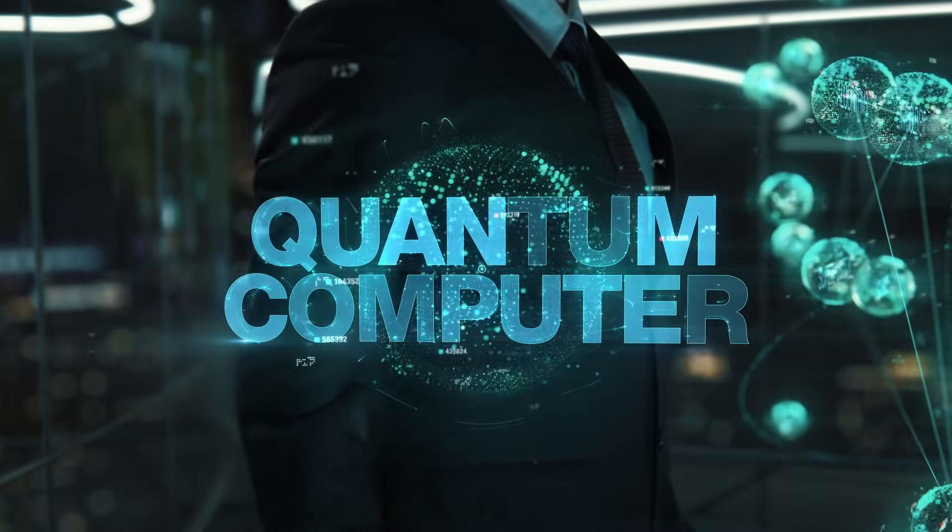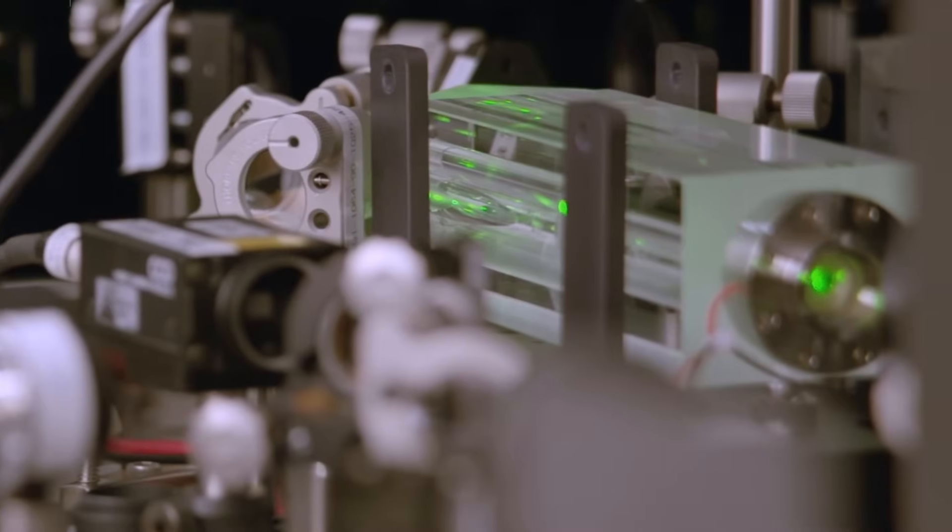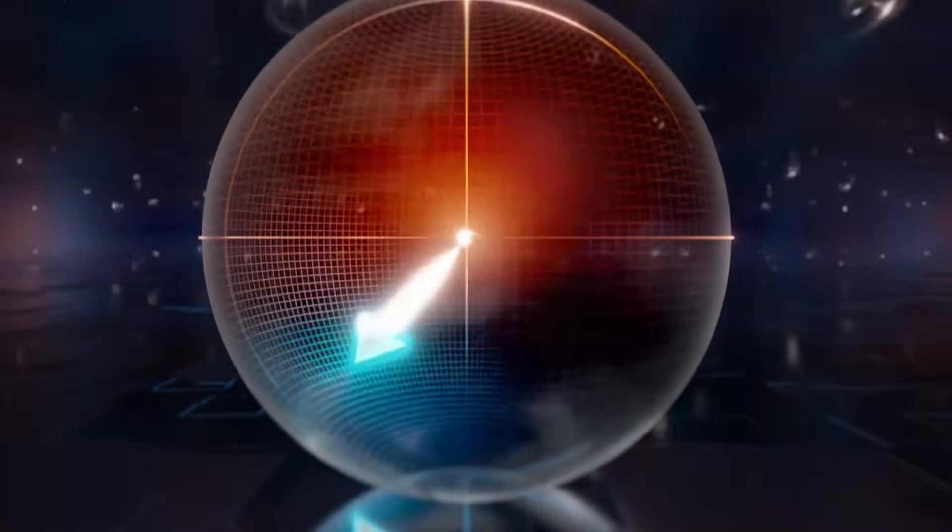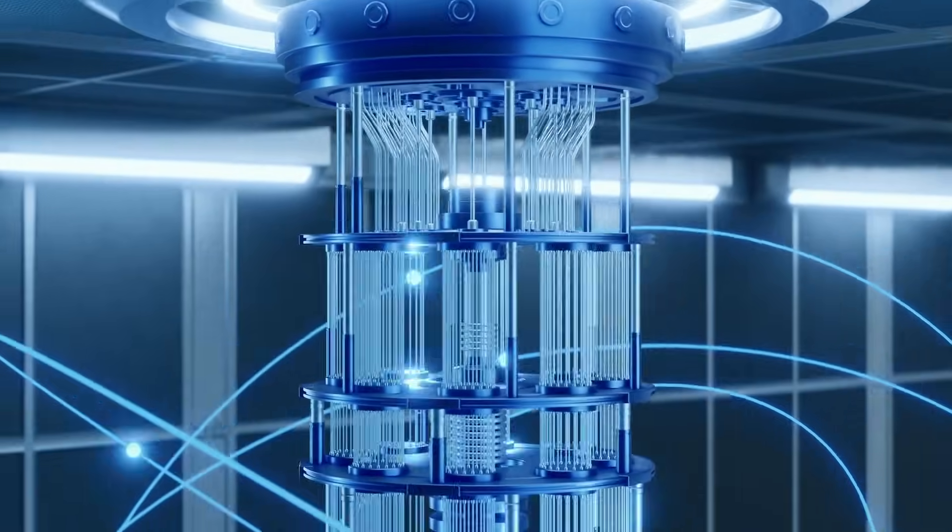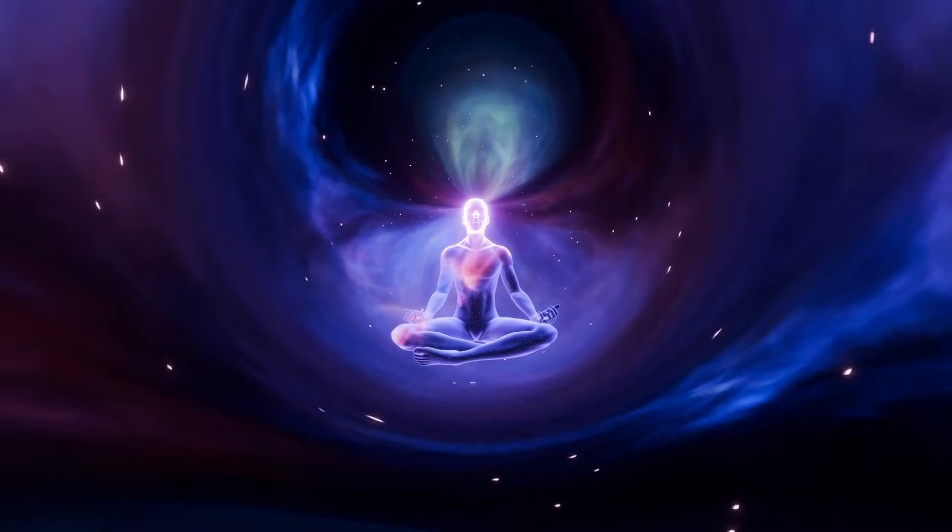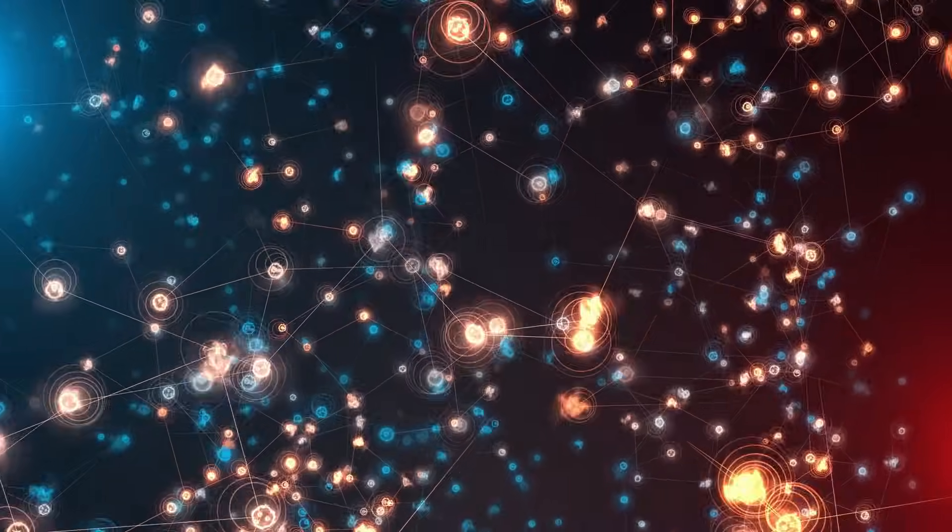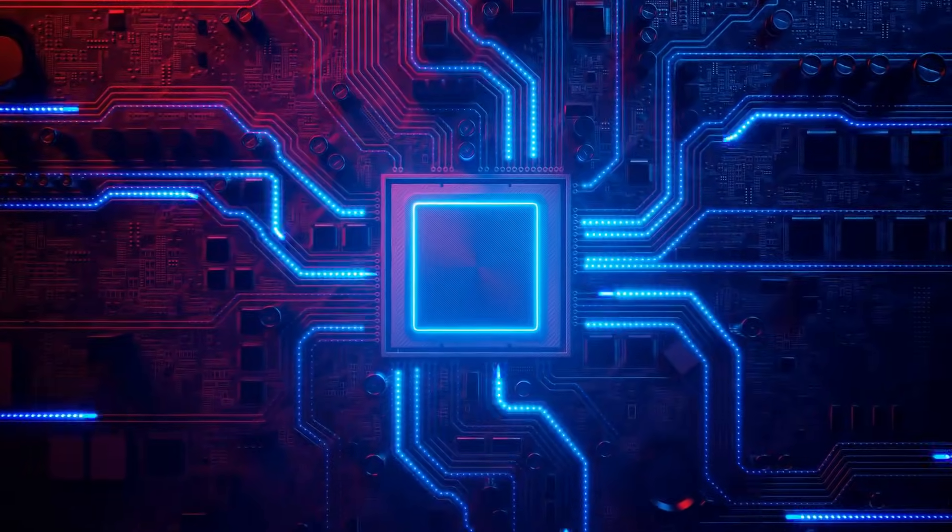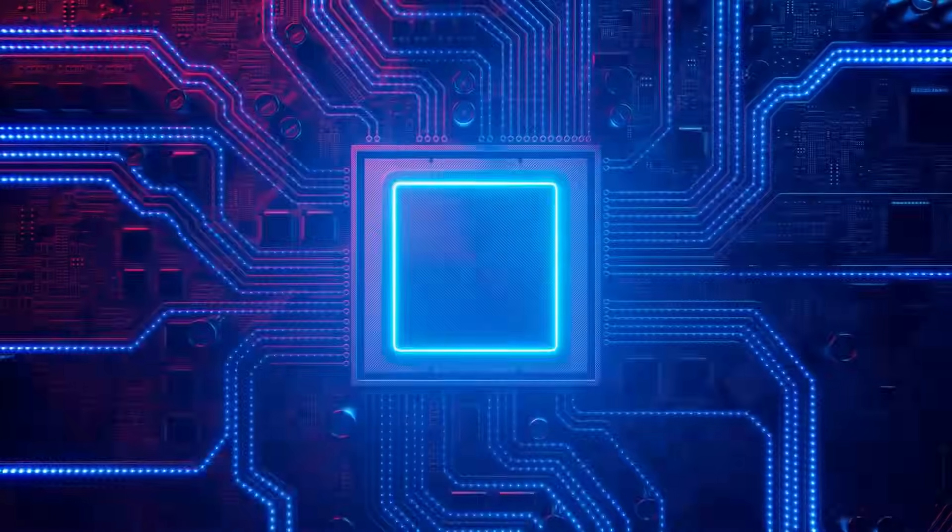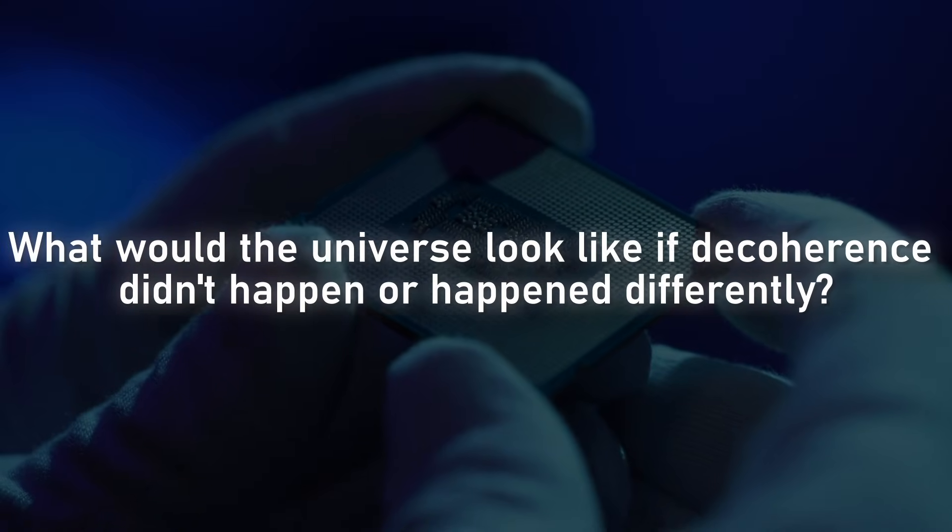The quantum world isn't confined to atoms anymore, it's a playground for human innovation. Once you accept that macroscopic objects, things made of millions of particles, can behave as a single quantum wave, the old assumptions about reality begin to crack. It forces us to ask uncomfortable questions. Is the world we see just the result of continuous collapse? Is classical physics simply a coarse, filtered version of a deeper quantum truth? What would the universe look like if decoherence didn't happen, or happened differently?